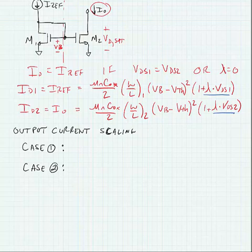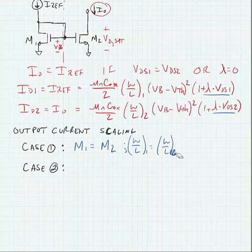However, we can use this to our advantage. We have two cases that we can look at. Case one is where transistor M1 is equal to M2, and what we're saying here is that W over L1 is equal to W over L2. If this is the case, then we get I_out is approximately equal to I_ref.